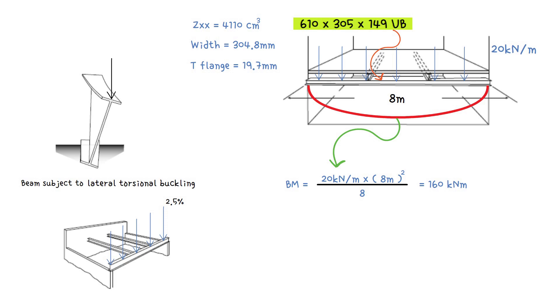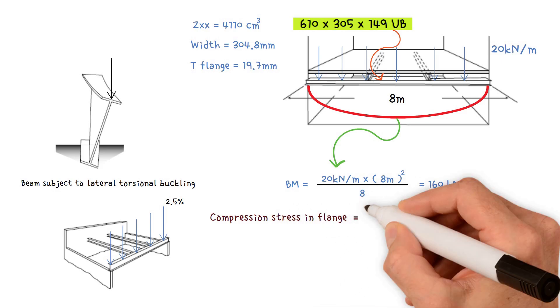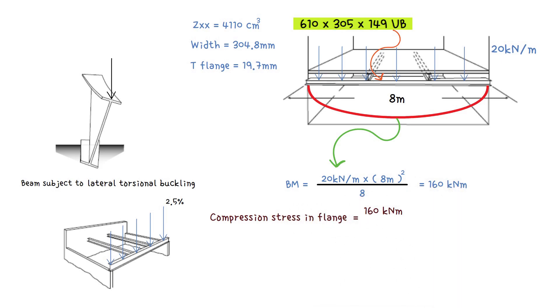Next step, we need to work out the compression stress in the flange, which equals the bending moment, 160 kilonewton meters, divided by the elastic modulus, 4110 cubic centimeters. We multiply by 1000, which gives us a value of 39 newtons per square millimeter.